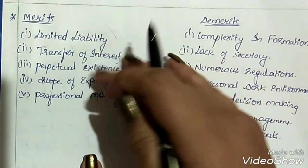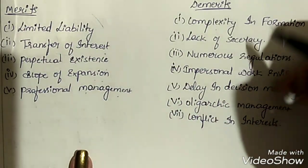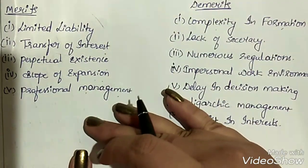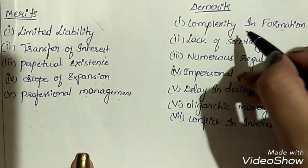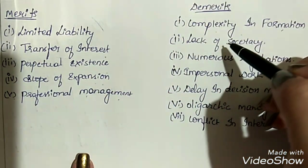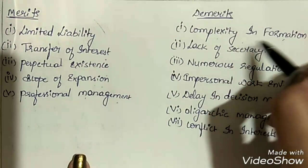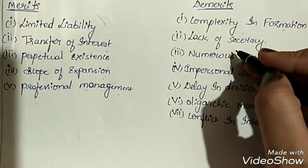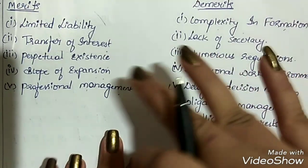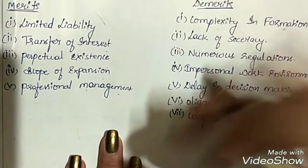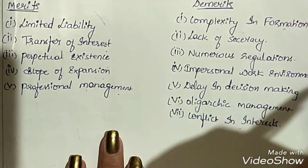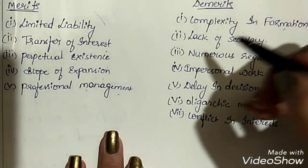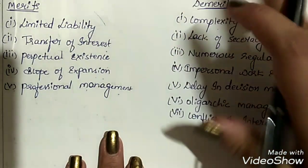These were the merits of the joint stock company. Now let's discuss the demerits. First is complexity in formation — compared to other types of organizations, formation of a joint stock company is complex and many legal formalities must be followed. Second is lack of secrecy — the company must maintain several accounts and records of its transactions and show them to the general public to invite investment, hence there is no secrecy.